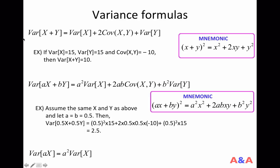This variance formula gives you the answer. x is the brewery's sales and y is the creamery's sales, so x plus y is the total sales. According to this formula, the variance — or the risk of the total sales — is not just the risk of the brewery's sales plus the risk of the creamery's sales. There is an additional term here: the covariance.